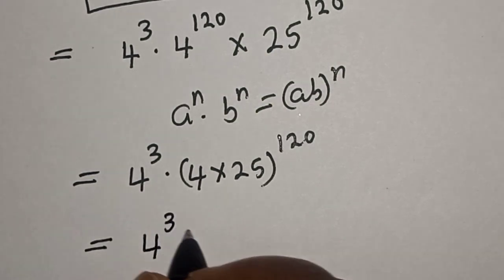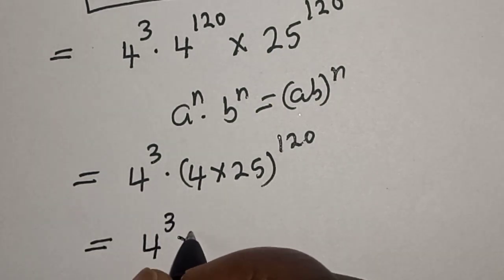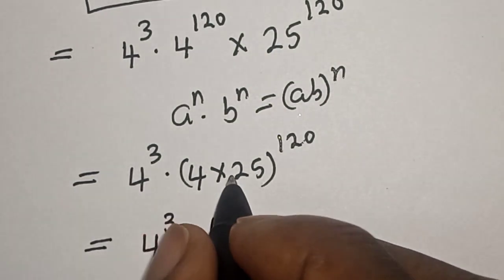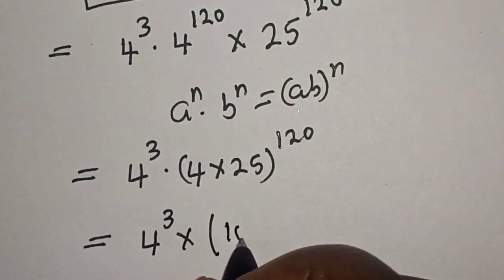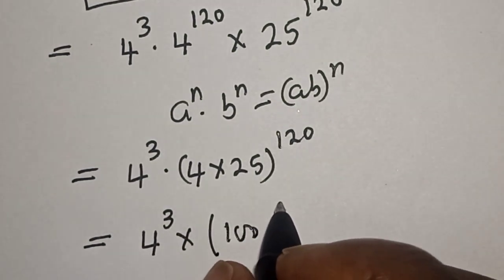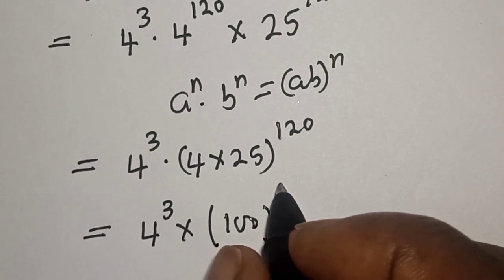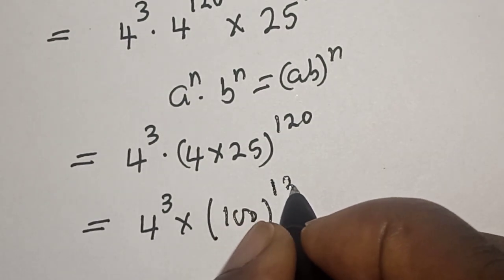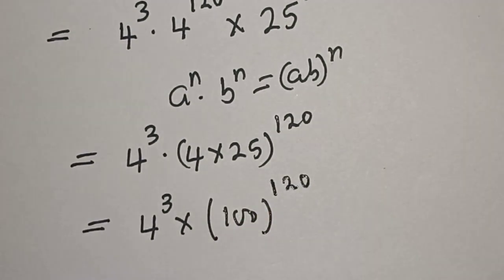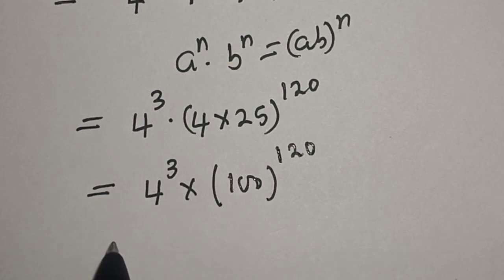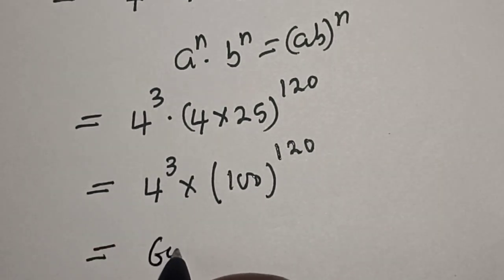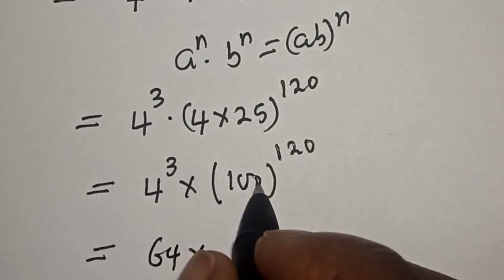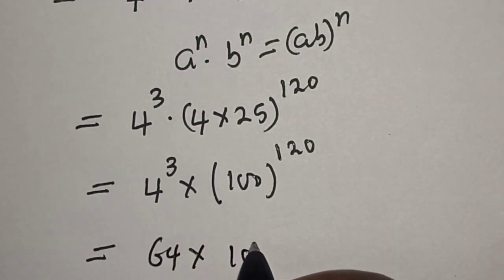So this equals 4 raised to power 3 — which is 64 — multiplied by 4 times 25, which is 100, raised to the power of 120. And 100 is 10 squared, so this becomes 64 multiplied by 10 squared raised to power 120, giving 64 multiplied by 10 to the power of 240.